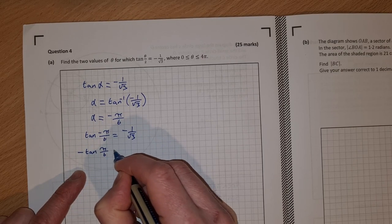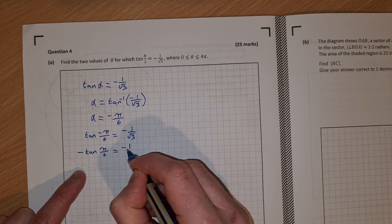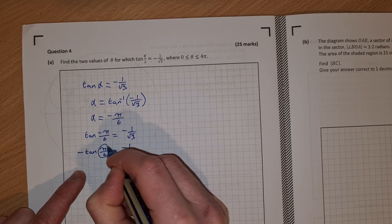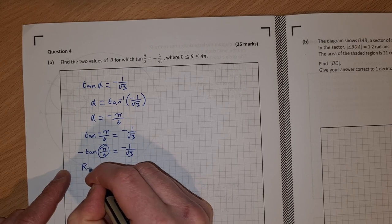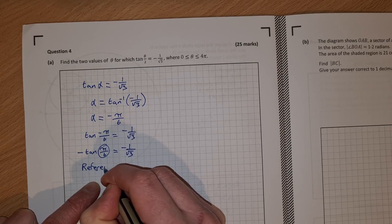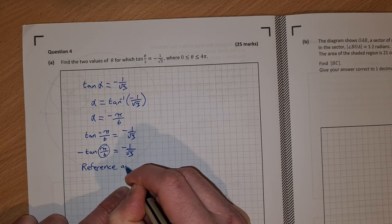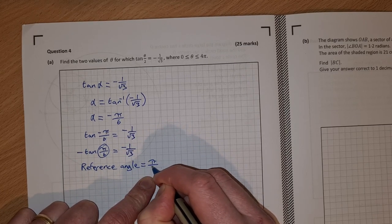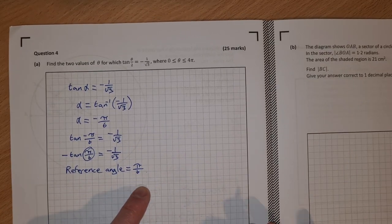So that gives us pi over 6. And pi over 6 is our reference angle. We're going to go to our unit circle.